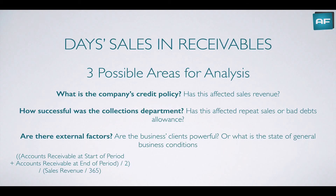Second, you could ask how successful the collections department was. Did something change in that department, and has this change affected repeat sales or the bad debts allowance? In theory, we always want the collections department collecting cash as soon as possible. But if they're too pushy and harass good customers, this may affect repeat sales — people might not want to buy from us if we hassle them every day. Further, has the collections department reduced our bad debts allowance?